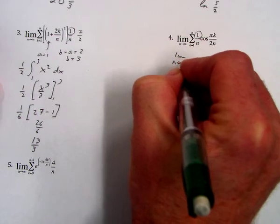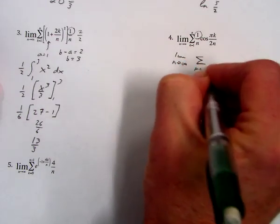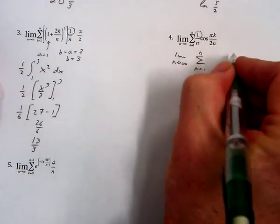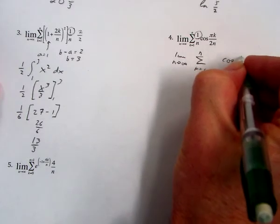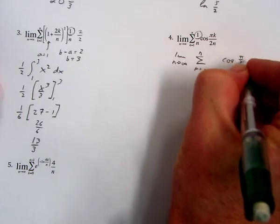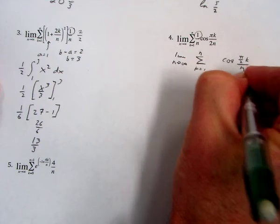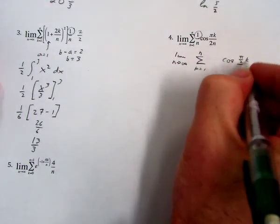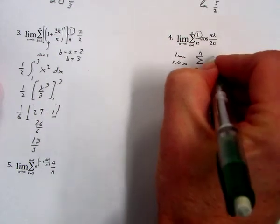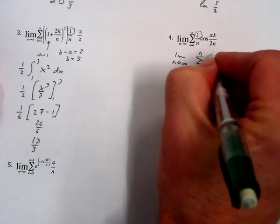We have limit as n goes to infinity, sum from k equals 1 to n, and I'm going to rewrite this first. This is cosine of pi over 2 times k divided by n, and that way we can see what we really want here is pi over 2. We want this to be pi over 2, not 1.